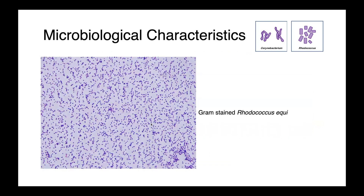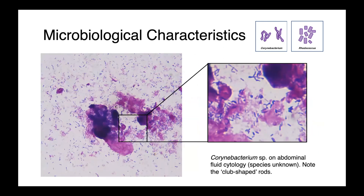Here's a gram stain of a pure culture of Rhodococcus, and you can see these small gram-positive coccobacilli. In this cytology preparation, we have abdominal fluid from an animal with a Corynebacterium infection. Here you can appreciate the irregularly shaped, club-shaped gram-positive rods that are classical of Corynebacterium species.